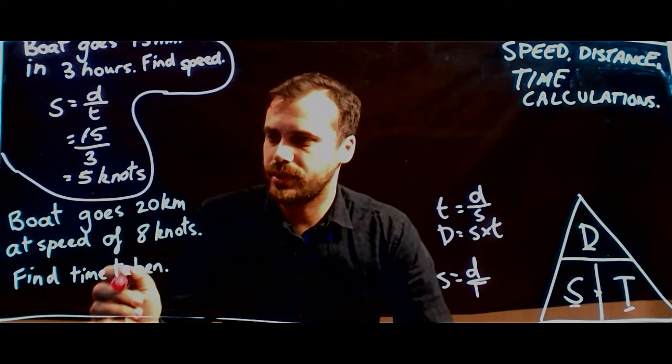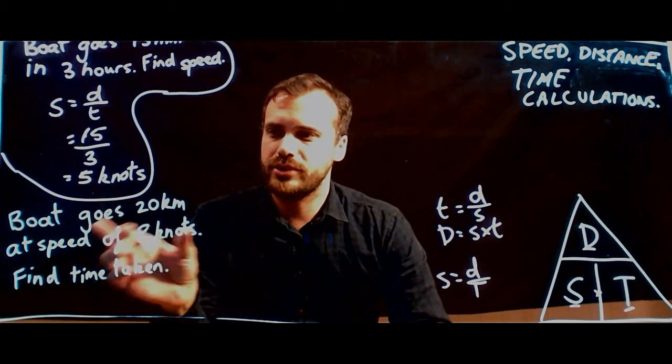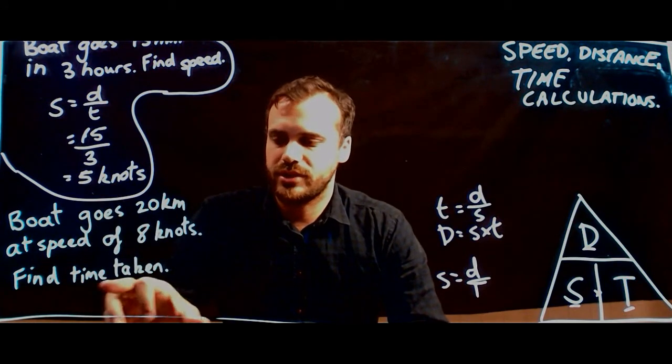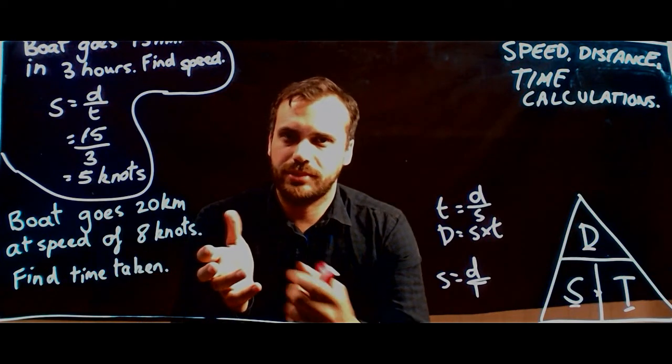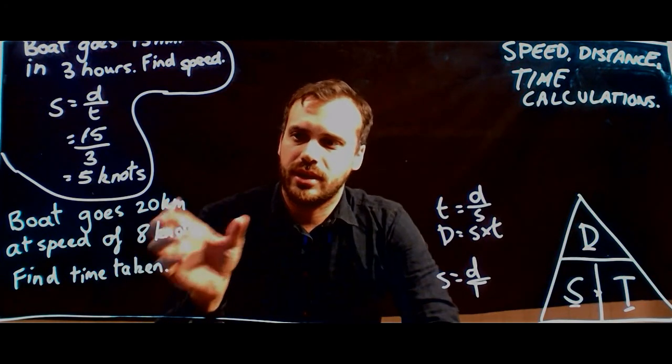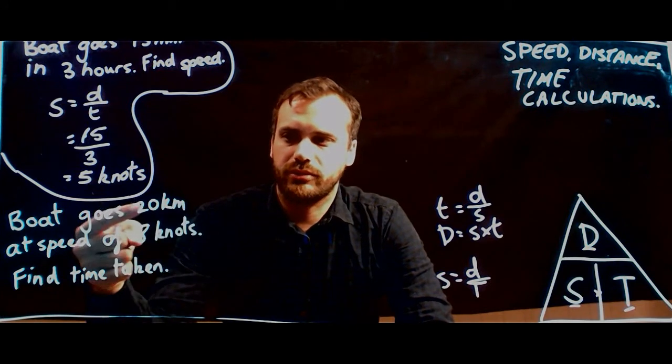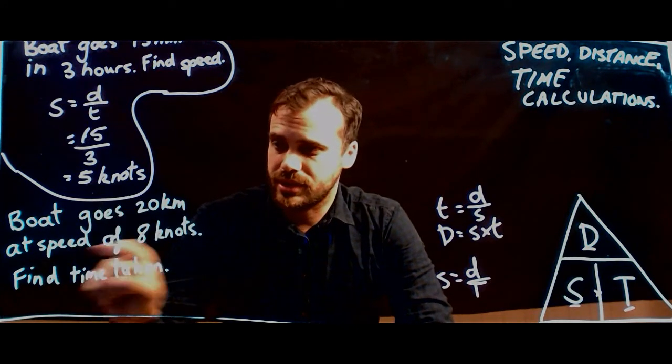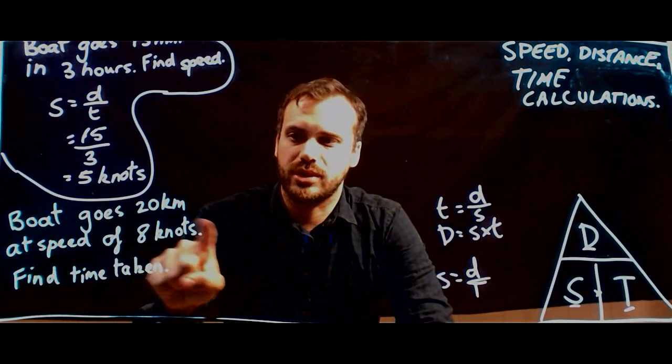Okay, so here's our second question here. A boat goes 20 kilometers at a speed of eight knots. Find the time taken. Now this question is a little bit confusing here, because one guy is talking like a regular person. A boat goes 20 kilometers. But then he starts talking like a sailor and starts talking in knots.